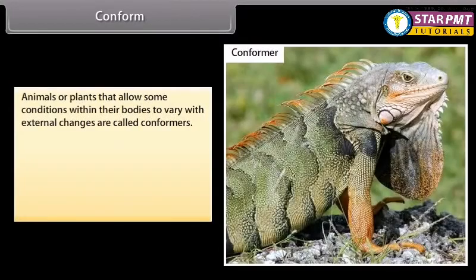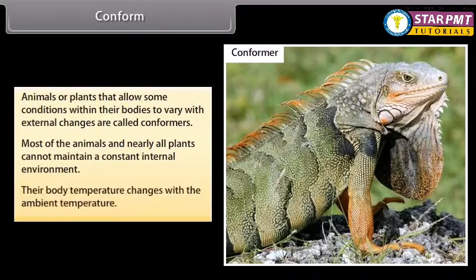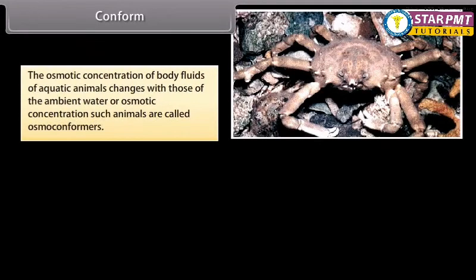Animals or plants that allow some conditions within their bodies to vary with external changes are called conformers. Most animals and nearly all plants cannot maintain a constant internal environment — their body temperature changes with the ambient temperature. The osmotic concentration of body fluids of aquatic animals changes with that of the ambient water; such animals are called osmoconformers.